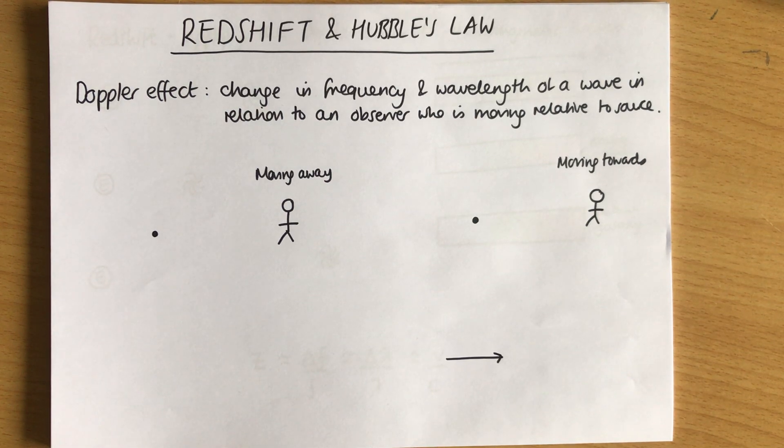Okay, so in this video we're going to have a think about redshift and Hubble's law. We're kind of looking at cosmology here and about how the universe is changing over time and how Hubble showed this. To understand this we have to start with the Doppler effect. The Doppler effect is the change in frequency and wavelength of a wave in relation to an observer who is moving relative to the source.